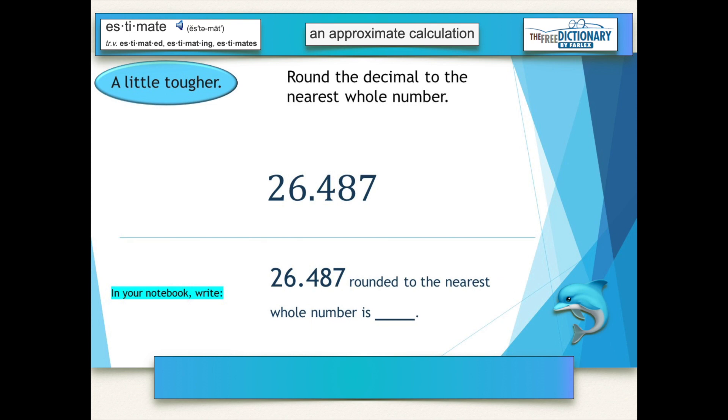That might look complicated, but again, just look at that first number after the decimal is all that matters when you're rounding to the nearest whole number. If we were rounding to the nearest tenth, that would be different, we would look at the next number after it. Or if we were rounding to the nearest one hundredth, we would look at the number after the eight. But in this case, our job is to round the decimal to the nearest whole number. All you'll look at is that four.